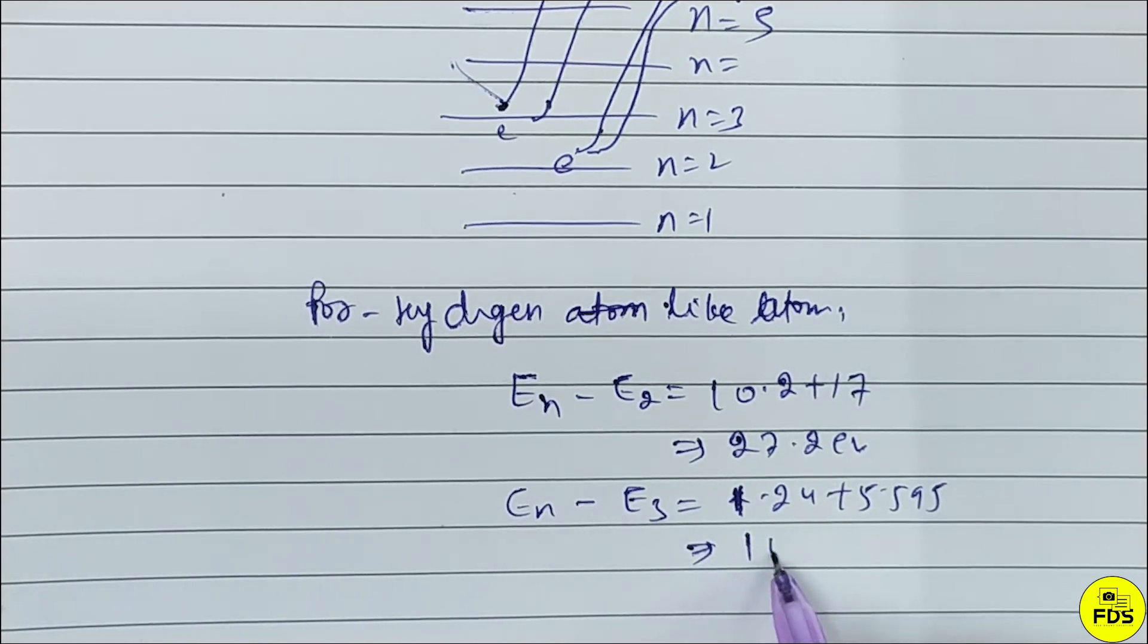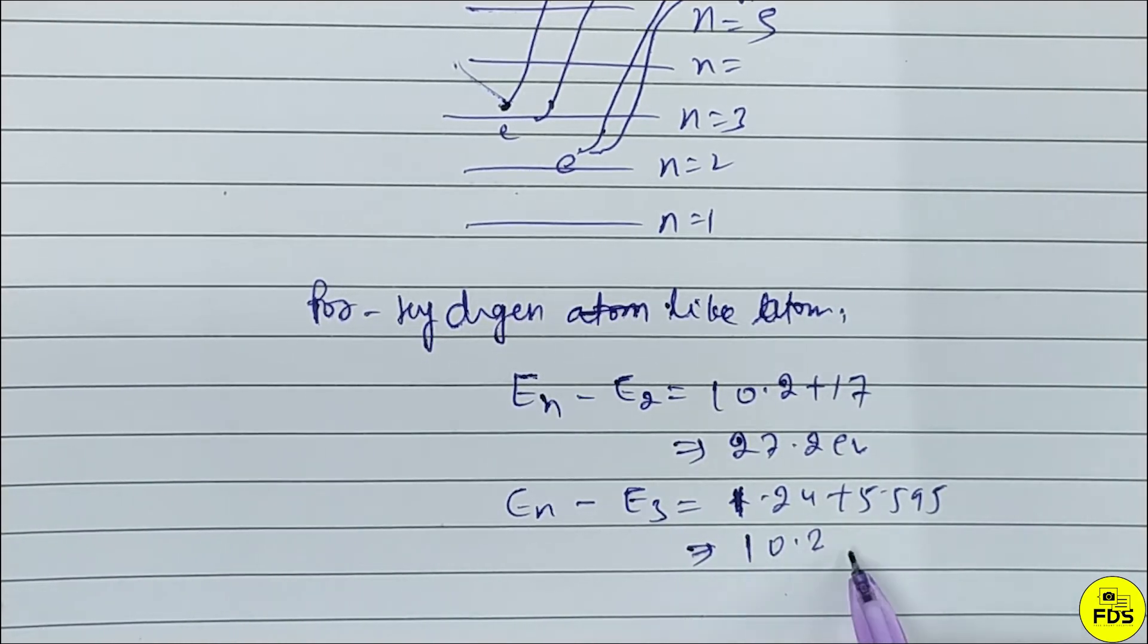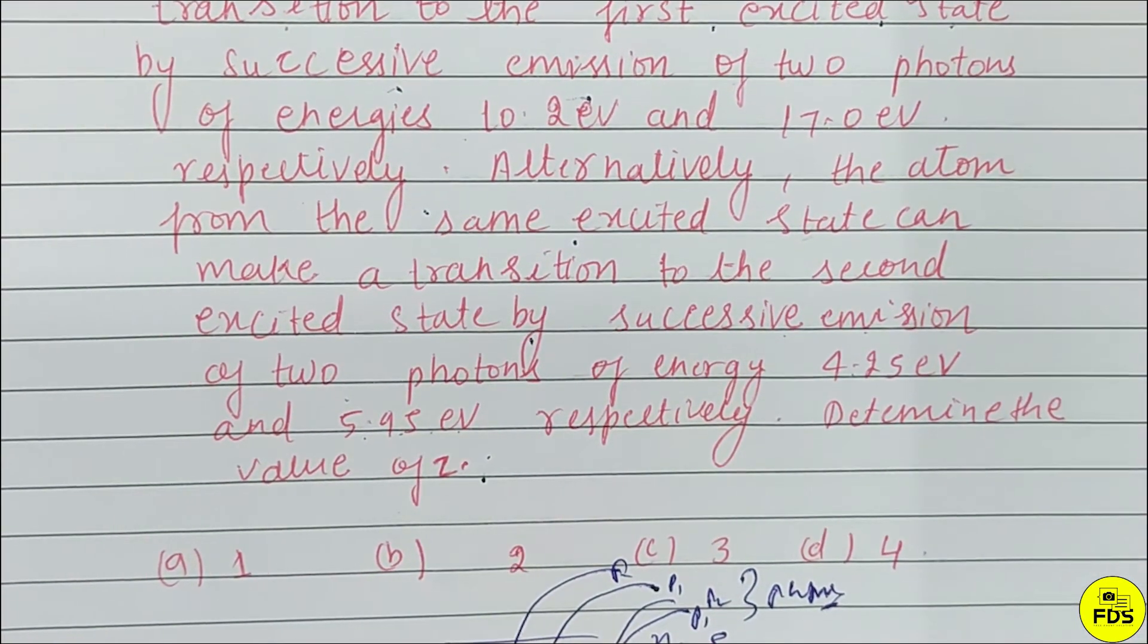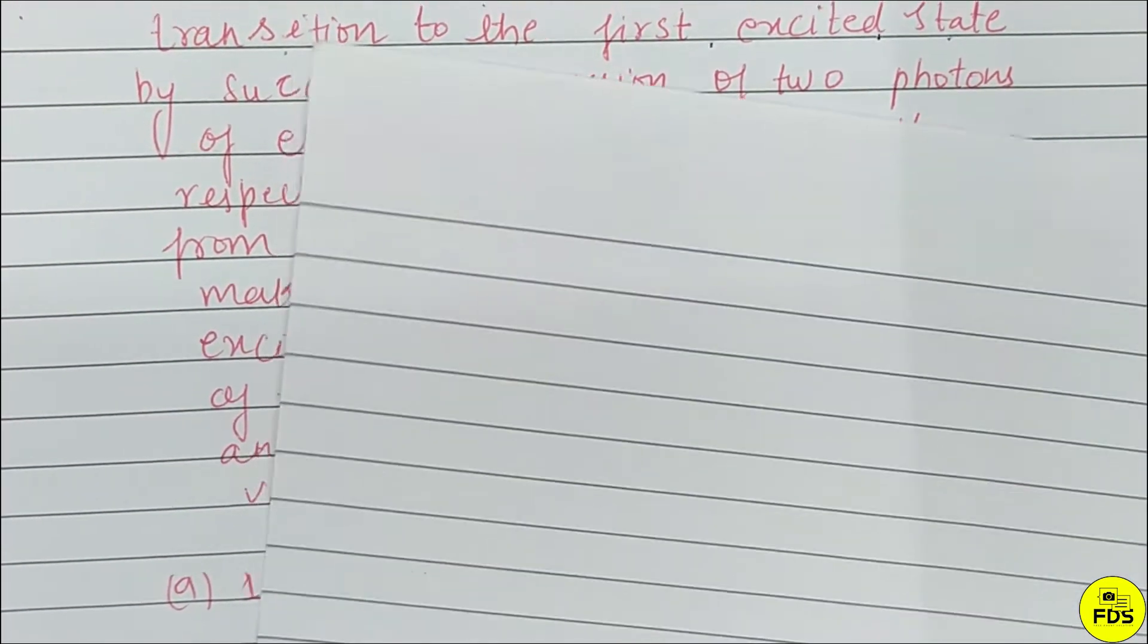10.2 eV is the total. E_3 minus E_2 equals this.